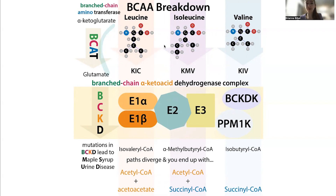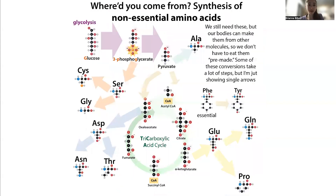Like the other branched-chain amino acids, valine goes through the branched-chain amino acid breakdown pathway. And like these other branched-chain amino acids, it's going to be essential — our bodies need to get it through our diet. We need all of the amino acids, but some of them our bodies can make themselves, and valine is one that we can't.